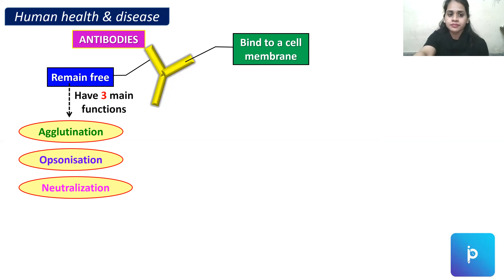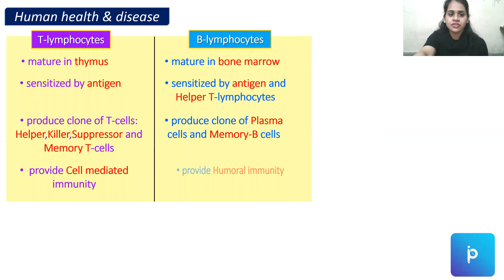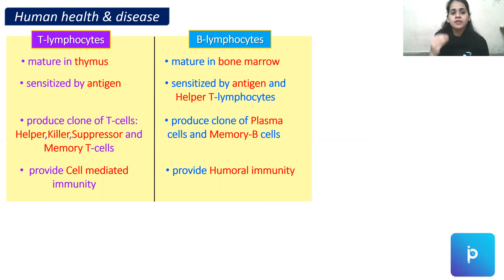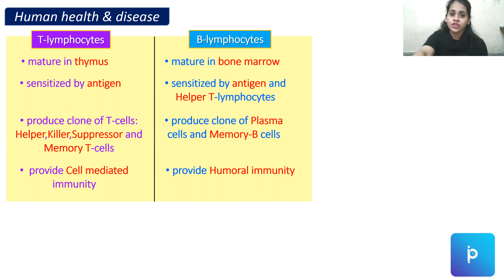To summarize the difference: T lymphocytes mature in the thymus, B lymphocytes in the bone marrow. Both get sensitized by antigen, but T cells produce four clones and B cells produce two clones. T lymphocytes give cell-mediated immunity and B lymphocytes give humoral immunity. This comparison can be asked in board exams.